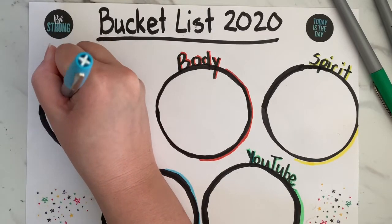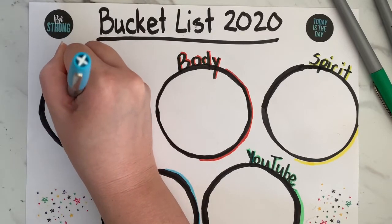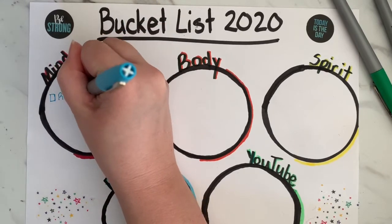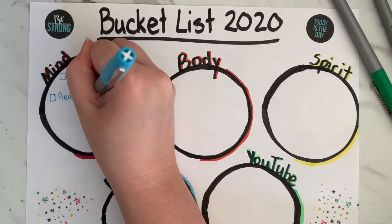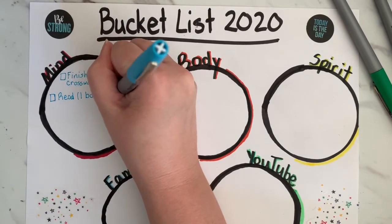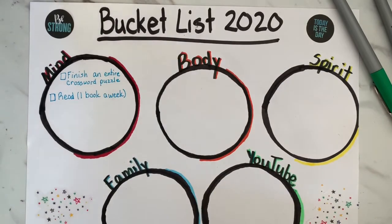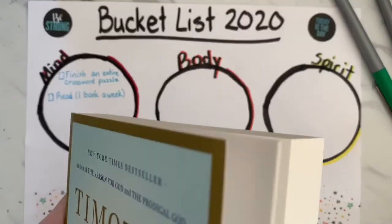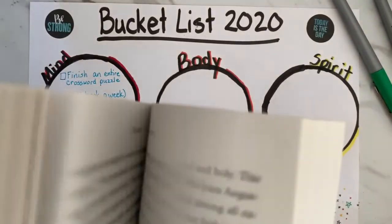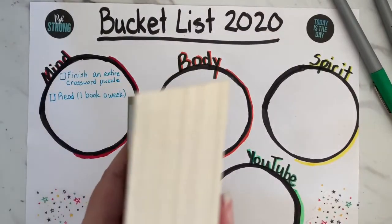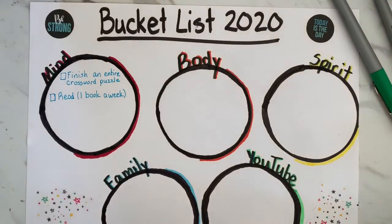The next thing I want to do is read more often. I want to try to do one book a week. My books are pretty thick, so I think one a week is a good goal. If you have books that are shorter, you might be able to read more than that in a week.